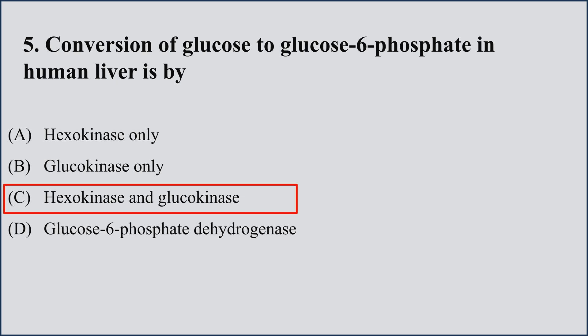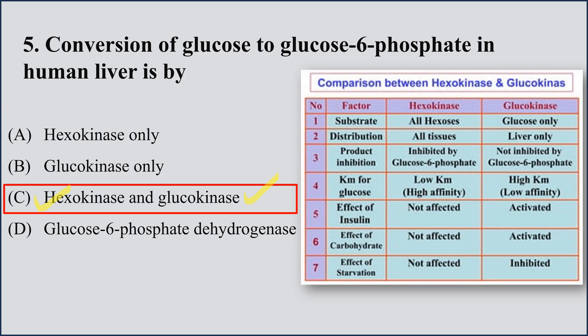There are important differences between glucokinase and hexokinase that may come in MCQs. Regarding substrates: hexokinase acts on all hexoses while glucokinase is only specific for glucose. Regarding distribution: hexokinase is present in all tissues while glucokinase is only present in liver cells.